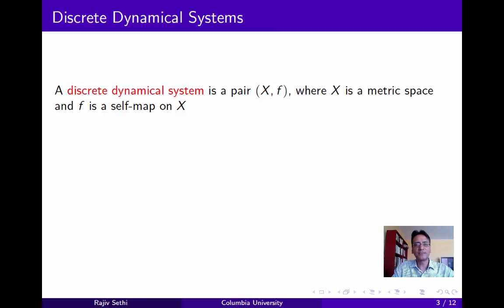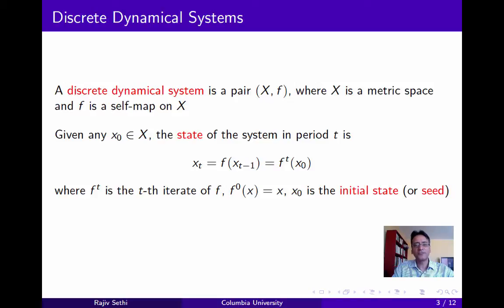A discrete dynamical system is just a pair consisting of a set X and a function f, which is a self-map on X, and you should think of X as a metric space, so it's endowed with a distance function. The function f tells us how the state of the system evolves from one period to the next, and in particular the state in period t, which we denote x_t, is just the image under f of the state in the previous period.